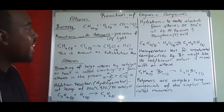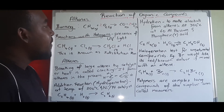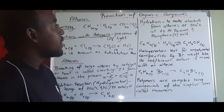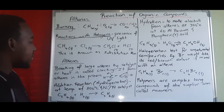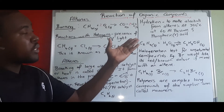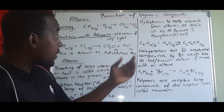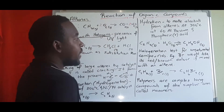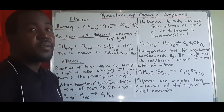Then we look at hydration. Hydration involves water. The hydration of alkenes is used to make alcohols. So while hydrogenation creates alkanes, hydration creates alcohols. We have ethene again, which reacts with water to give us C₂H₅OH, which is ethanol.